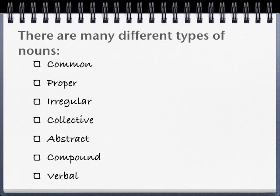There are many different types of nouns including common, proper, irregular, collective, abstract, compound and verbal nouns.